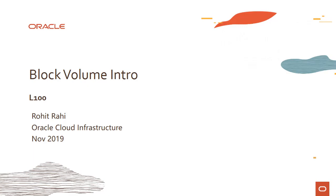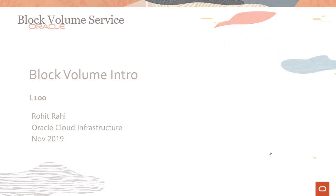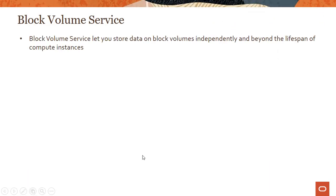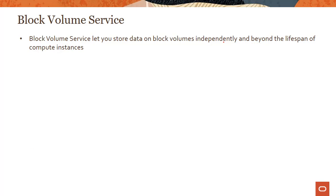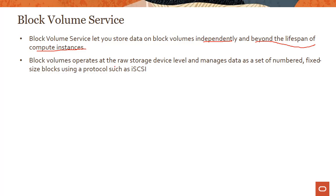The OCI block volume service — in this module we'll introduce the block volume service and talk about its inherent features. The block volume service lets you store data on block volumes independently and beyond the lifespan of compute instances. Block volumes operate at the raw storage device level and manage data as a set of numbered, fixed-size blocks using storage protocols such as iSCSI.